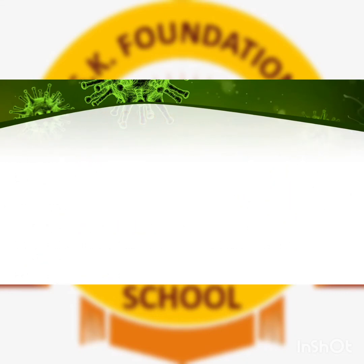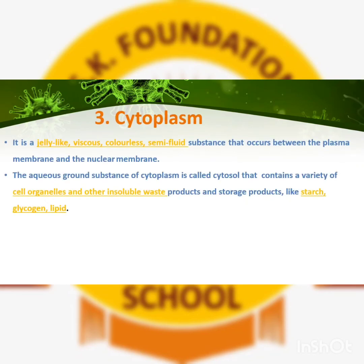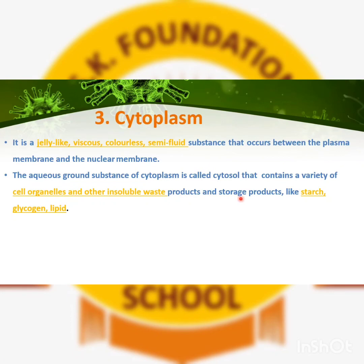After learning about cell wall, we now move to the third point: cytoplasm. Cytoplasm is a jelly-like, viscous, and colorless fluid inside the cell. The aqueous ground substance of cytoplasm is called cytosol. That cytosol contains a variety of cell organelles and other insoluble waste. Cytoplasm also stores products like starch, glycogen, and lipids.